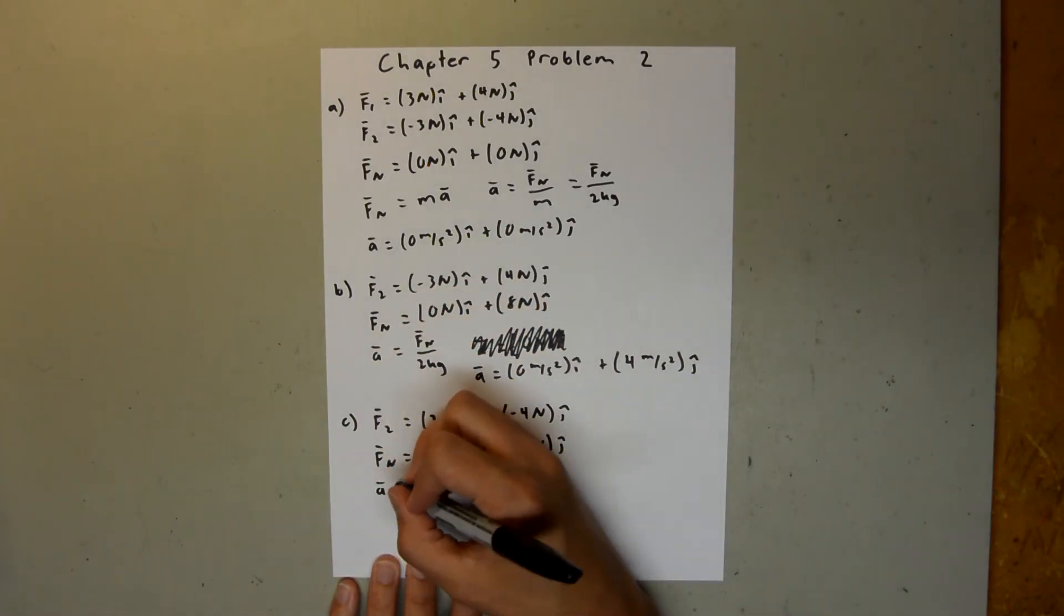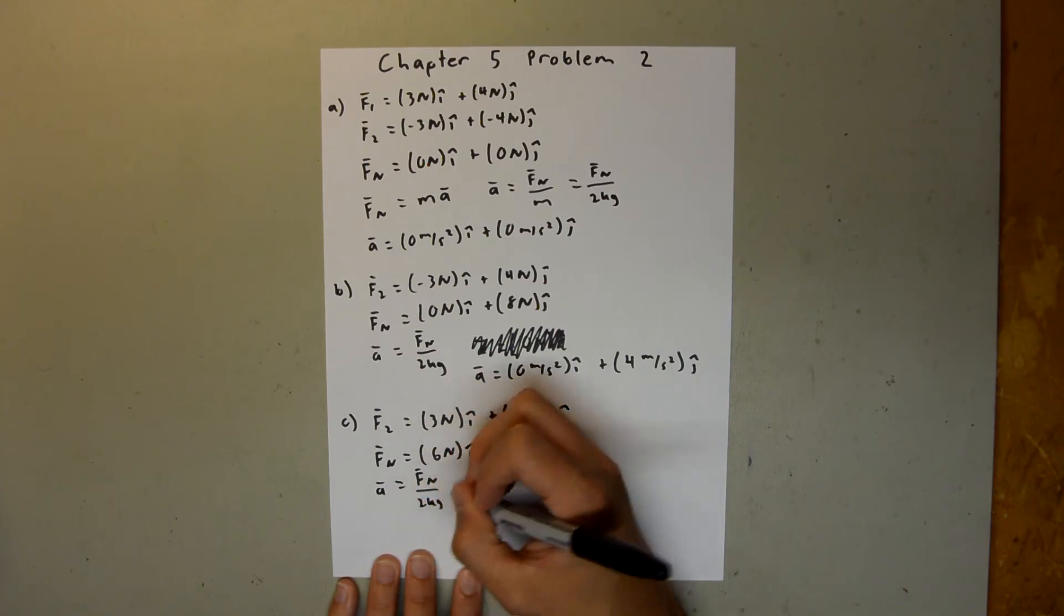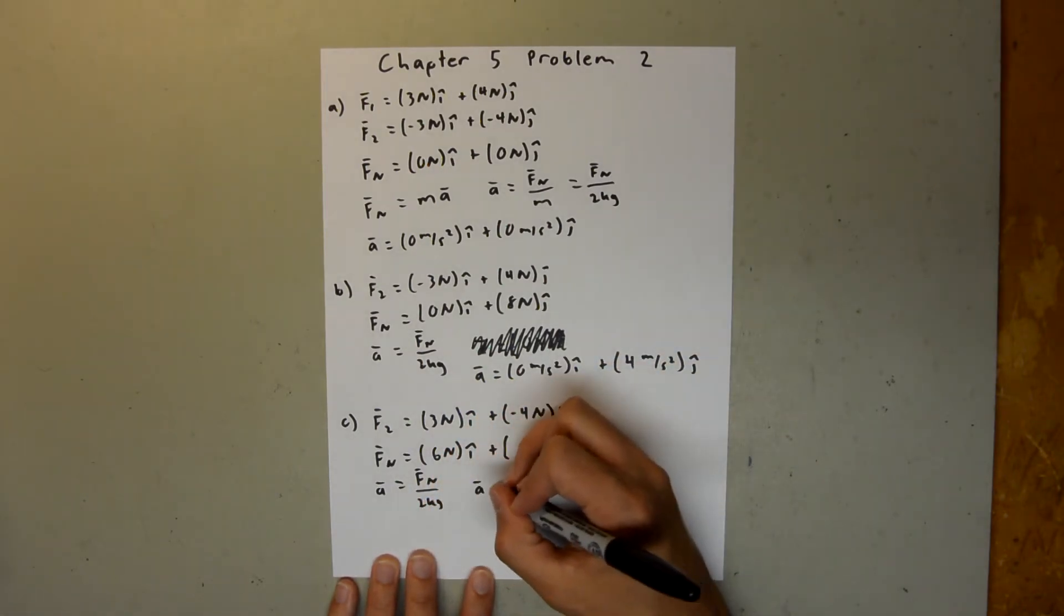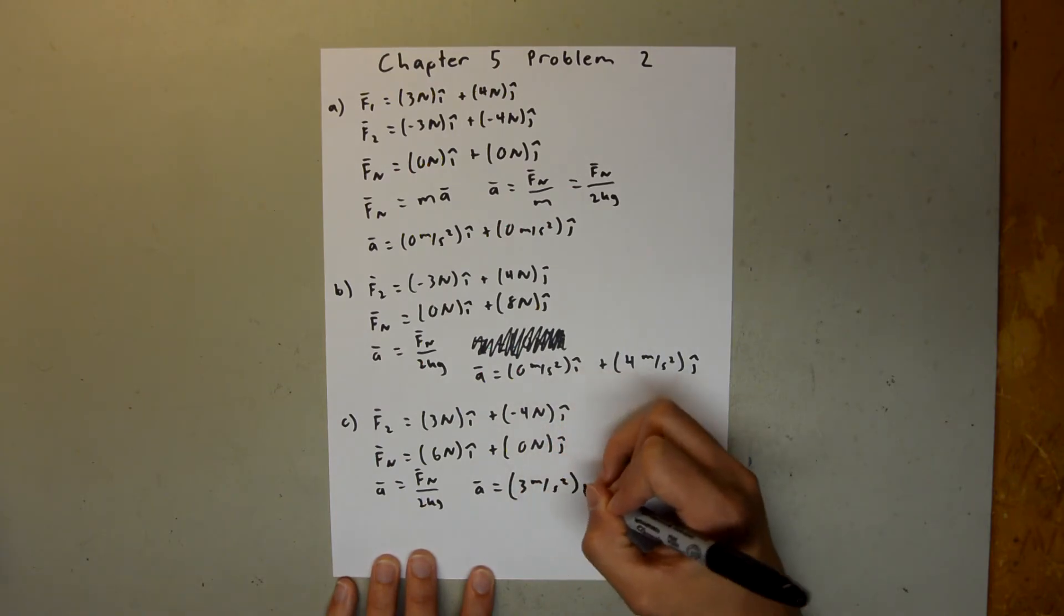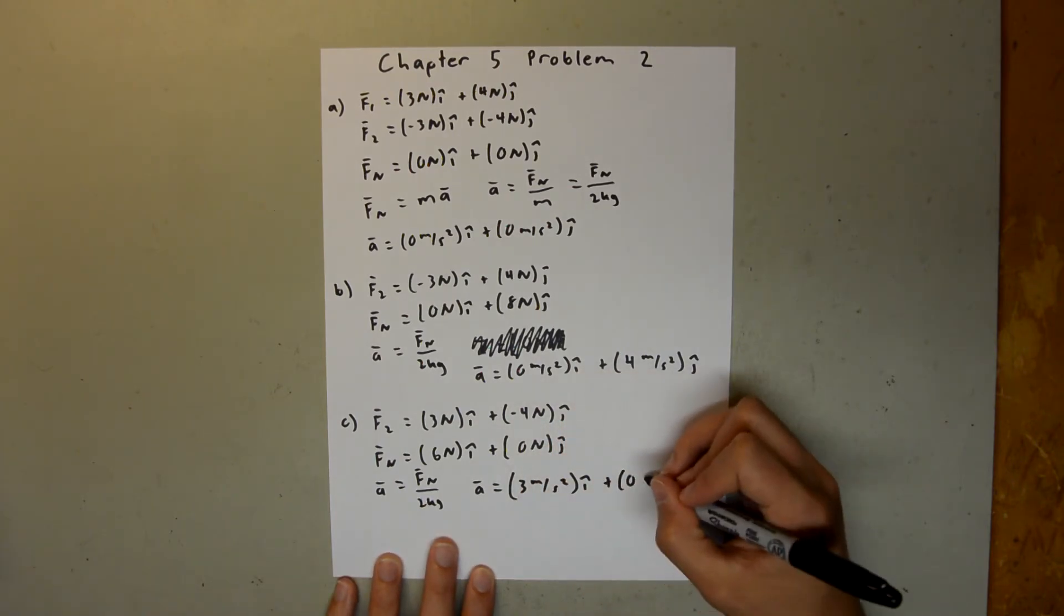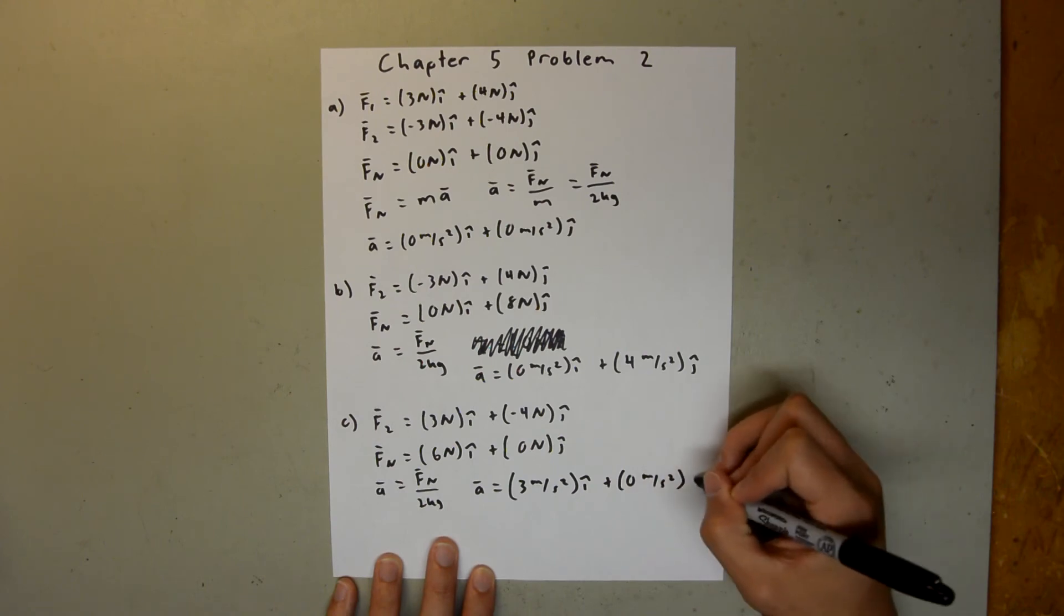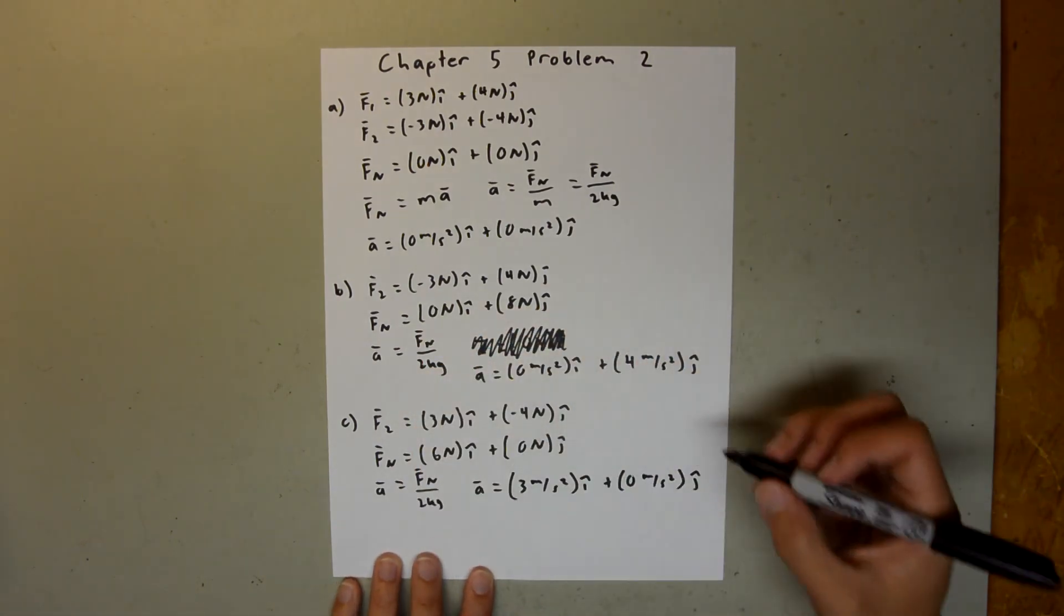And, again, we can use our derived equation, a is equal to fn over 2 kilograms. So, our a is going to be equal to 3 meters per second squared i-hat plus 0 meters per second squared j-hat. 6 divided by 2 and 0 divided by 2.